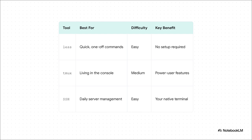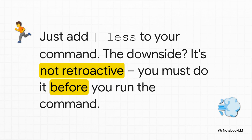The fastest, simplest fix is just to pipe your command's output into less. If you know a command is going to spit out a ton of text, you just add that little vertical bar and the word less to the end. It's a fantastic solution for that exact moment. But its big weakness is that it's not retroactive — once the output scrolls away, it's gone for good.